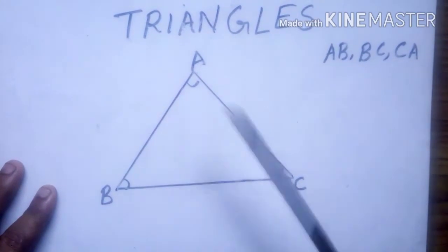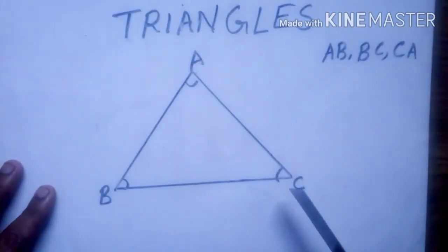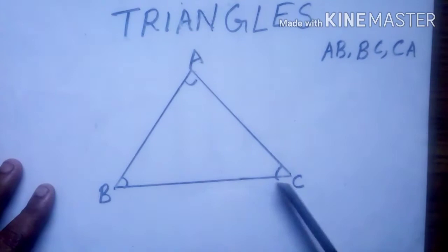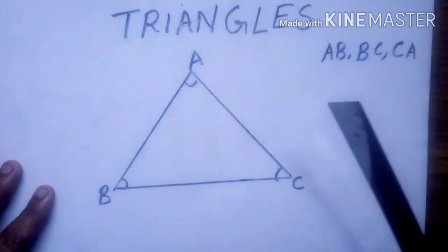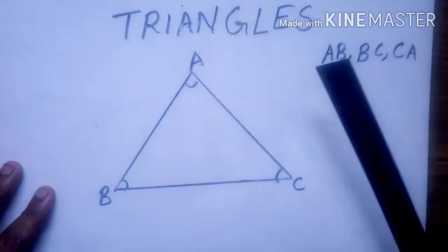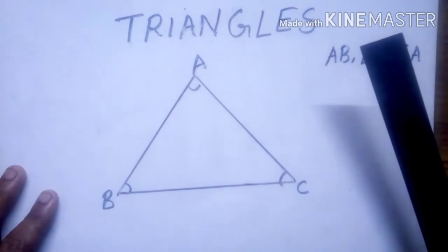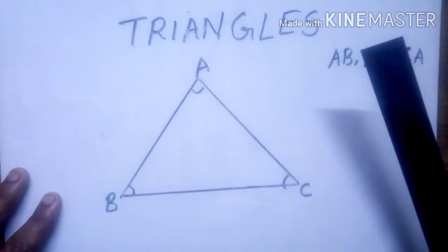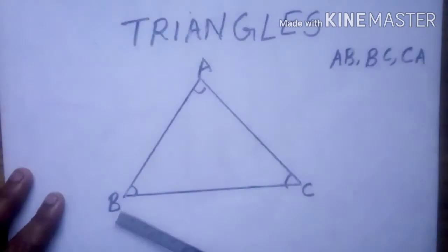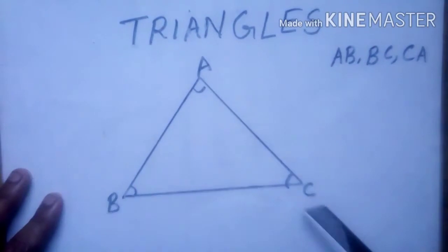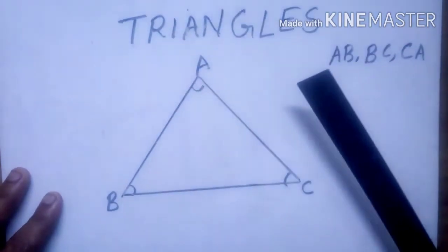Point A, point B, and point C are called its vertices. You have learned the vertex of a polygon. So here, point A, point B, and point C are its vertices.